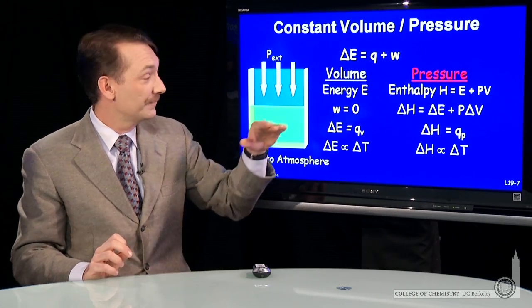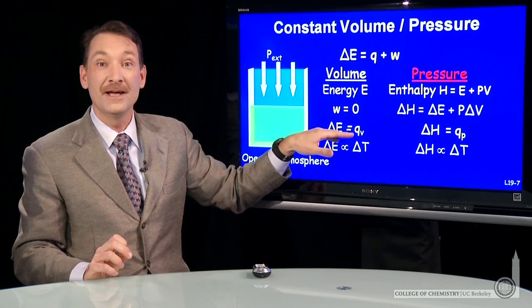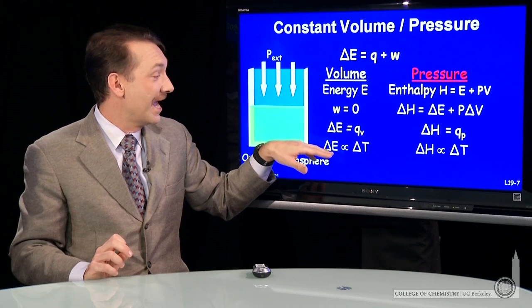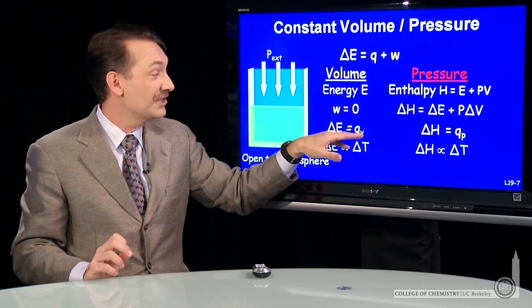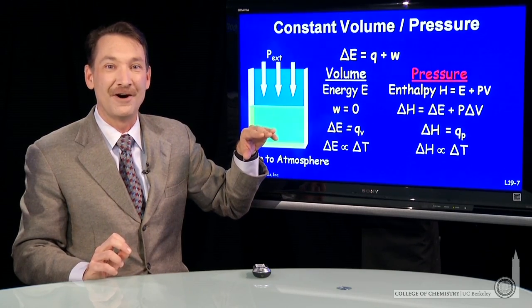So here are two different pathways. A constant volume pathway for an ideal gas, the energy is proportional to the temperature change, and the energy is the heat evolved.